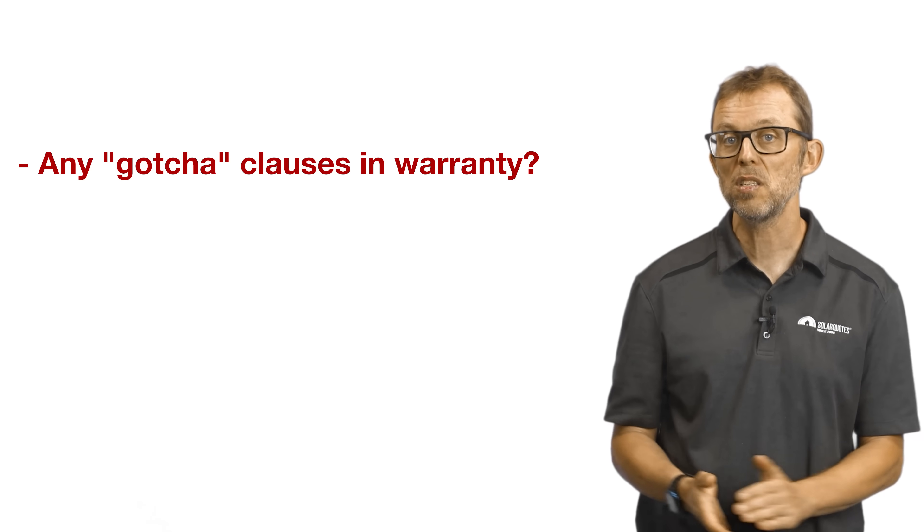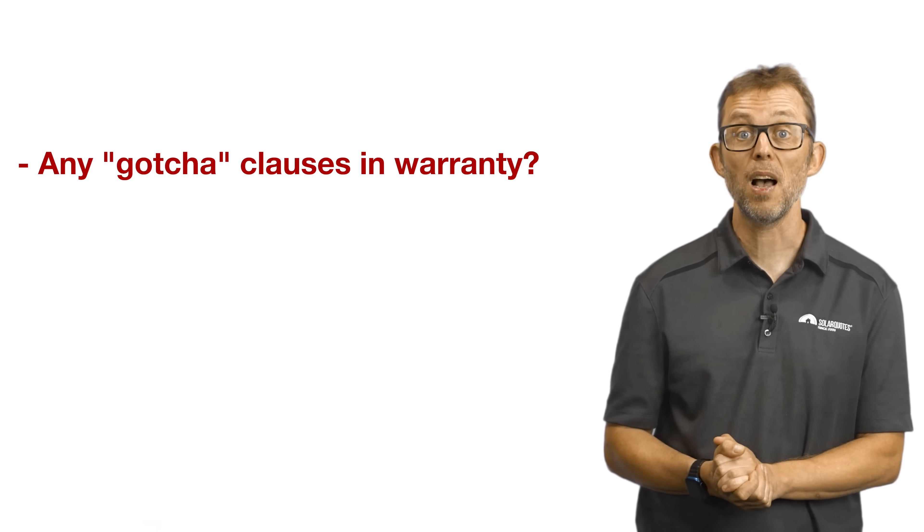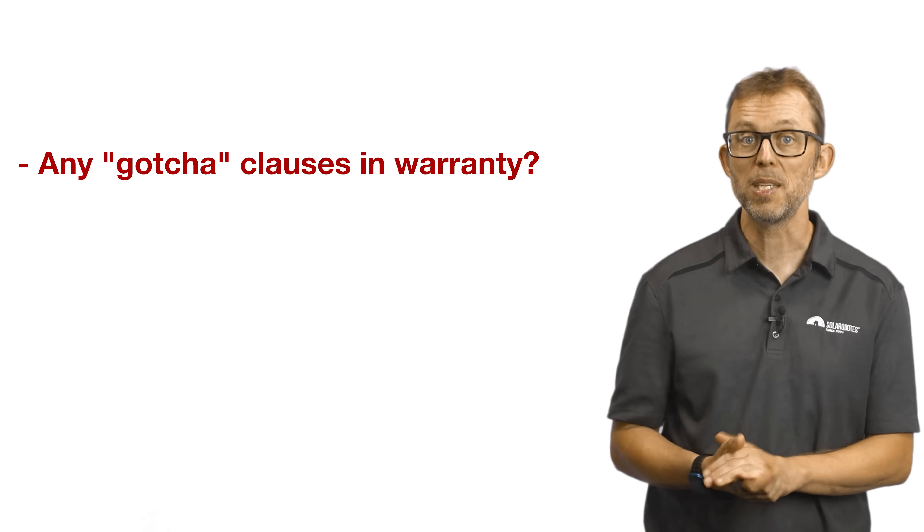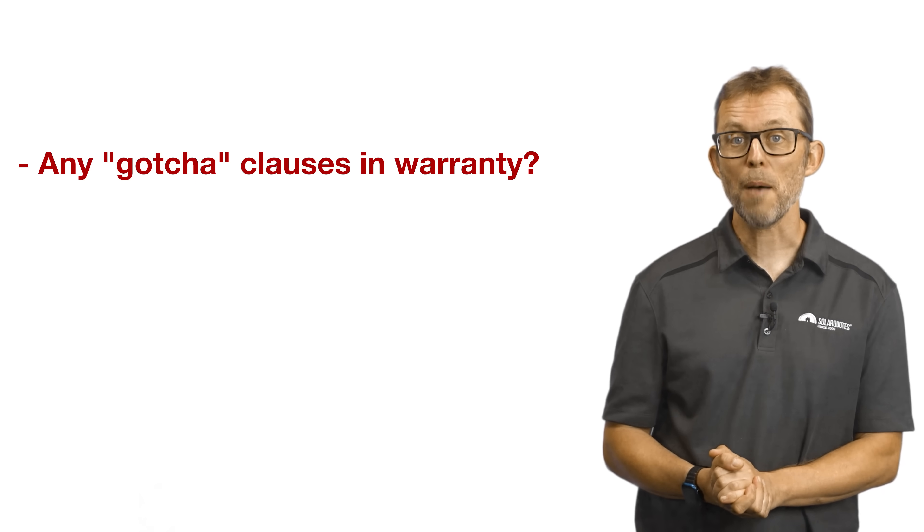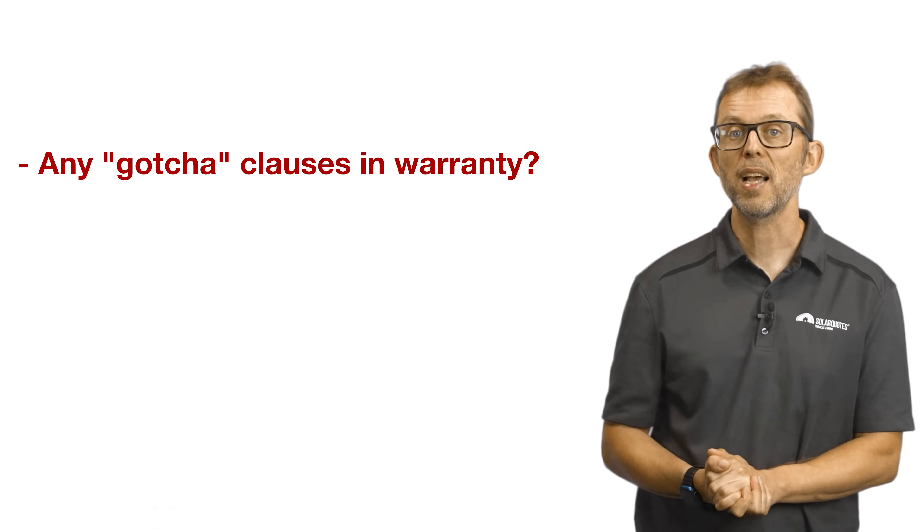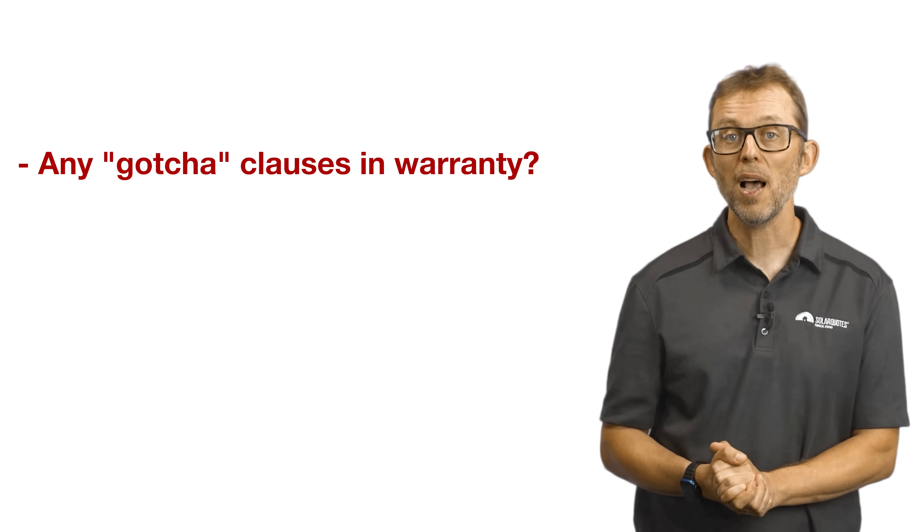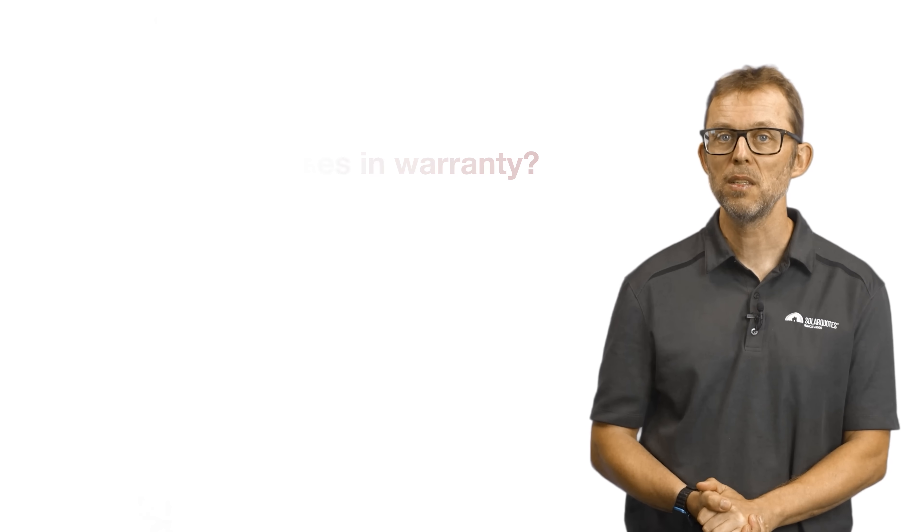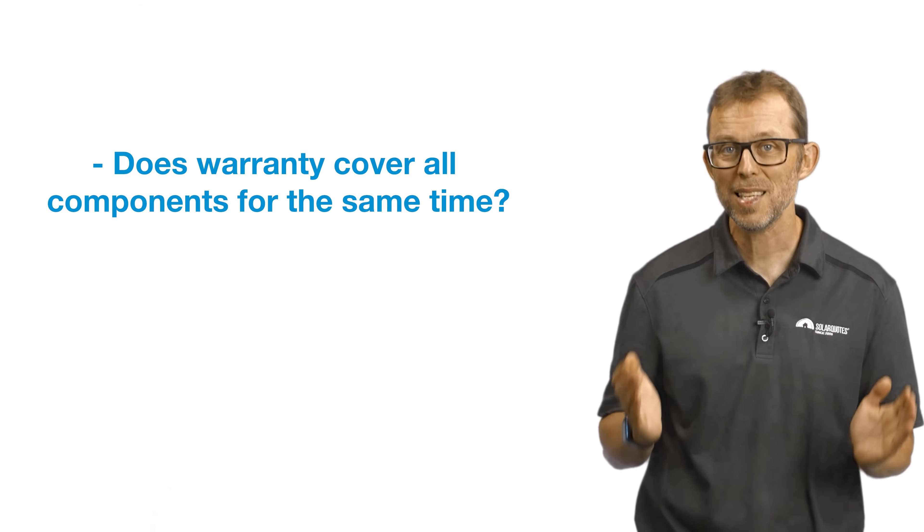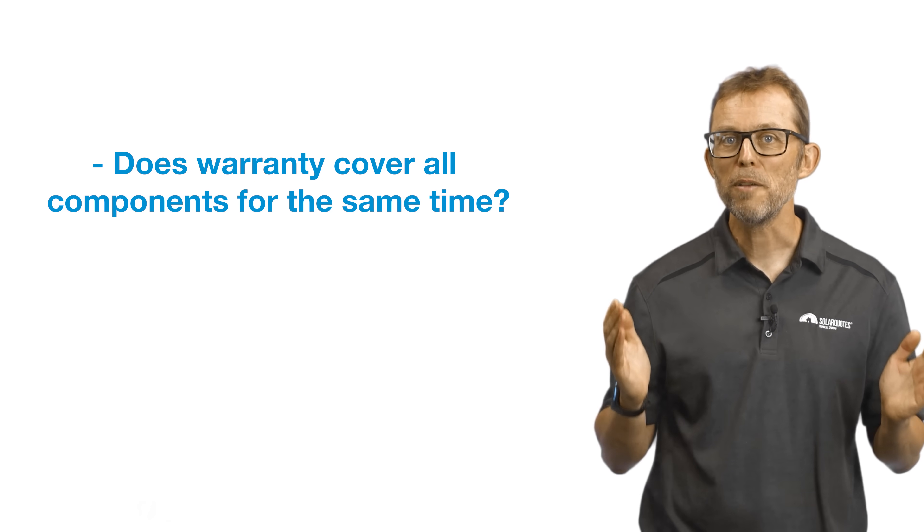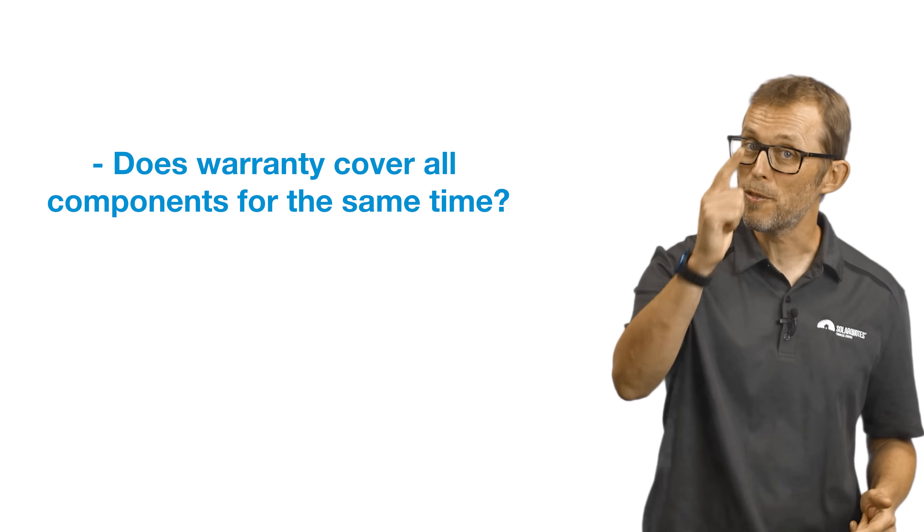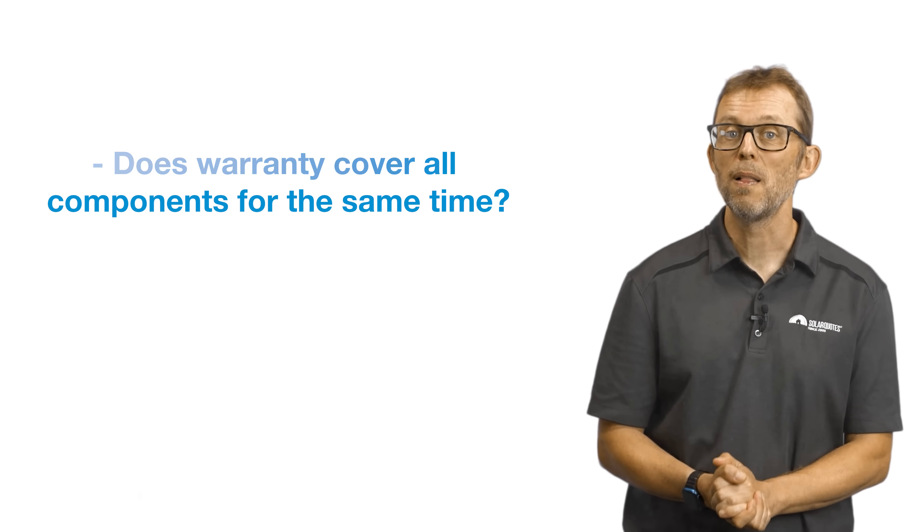Next, look for gotchas. Are there any clauses in the warranty, reducing what's covered or which void it entirely? Some warranties don't allow you to cycle a battery more than once a day. Others offer unlimited cycles for the warranty period. Others void the warranty if the ambient temperature goes outside a narrow range. Some mandate that the battery must always have an internet connection. Finally, some require online warranty registration shortly after installation. Now check, does the warranty cover the entire battery or only parts of it? A classic example is a 10-year warranty for the battery but only five years for the supporting electronics. If something important breaks in year six, you've got a hefty repair bill coming your way.